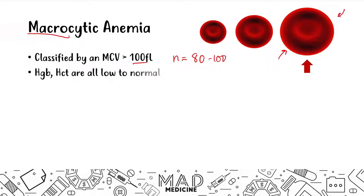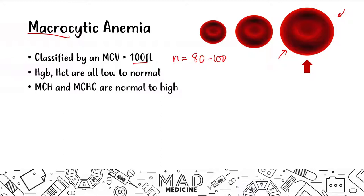The hemoglobin and hematocrit are going to be low to normal, but the MCH and MCHC — the mean corpuscular hemoglobin and hemoglobin concentration — are going to be slightly elevated, just because you have a larger red blood cell that is more filled with hemoglobin. So just keep that in mind.